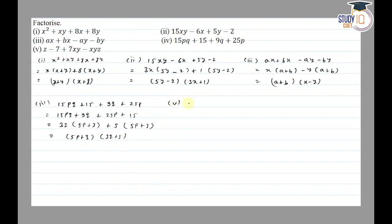Then fifth part is z minus 7 plus 7xy minus xyz is equal to. So z minus xyz, then minus 7 plus 7xy. This is z common, so 1 minus xy, and minus 7 common, so 1 minus xy. So factor z minus 7 and 1 minus xy.